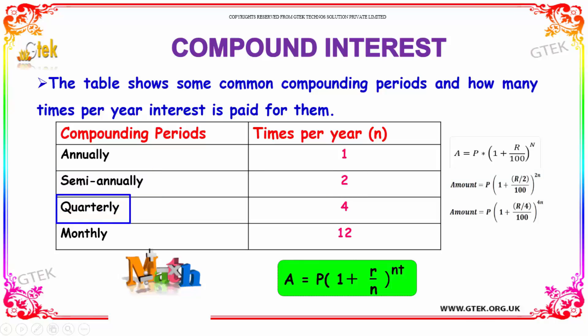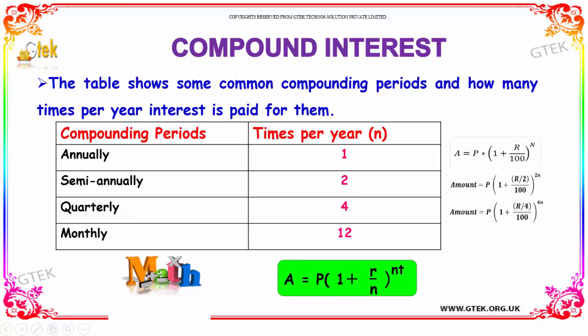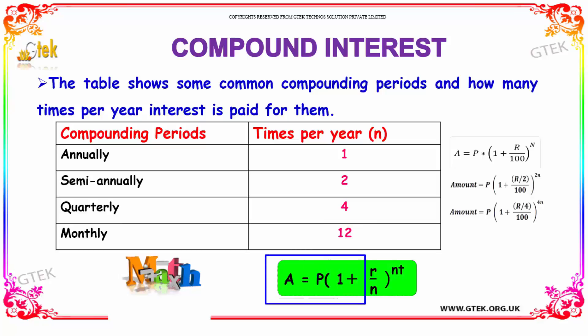If the compounding period is quarterly, the interest to be paid is 4 times per year, and the formula is A = P into (1 + r/4/100) whole power 4n. If the compounding period is monthly, the interest to be paid is 12 times per year, and the formula is A = P into (1 + r/12/100) whole power 12n. So, the general formula for compound interest is A = P into (1 + r/n) whole power n into t.